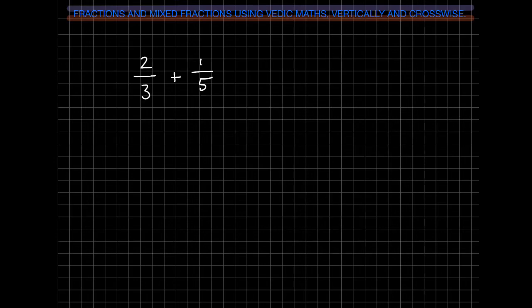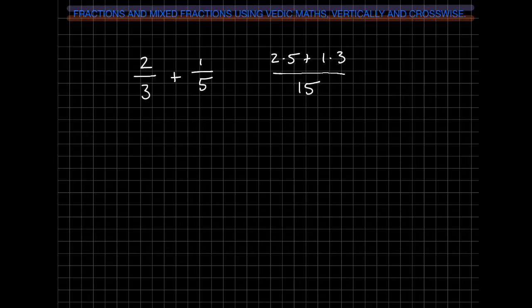Once again we're going to use vertically and crosswise. So we're going to say 2 times 5 plus 1 times 3 for our numerator. Our denominator, we multiply straight across: 3 times 5 gives us 15. So we have 10 plus 3, which equals 13 over 15. Our answer is 13 fifteenths.